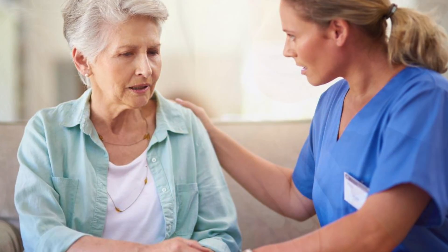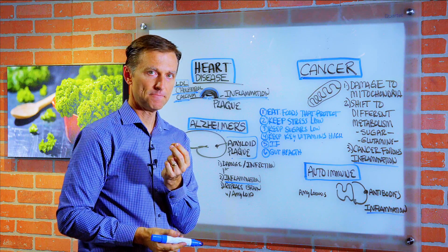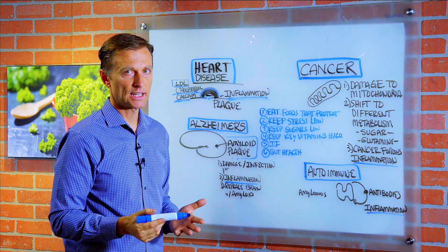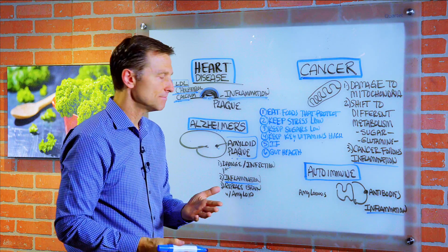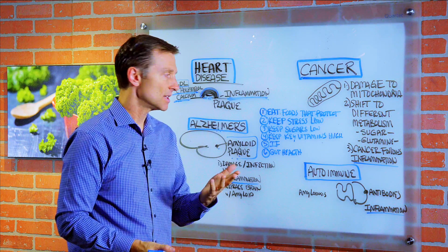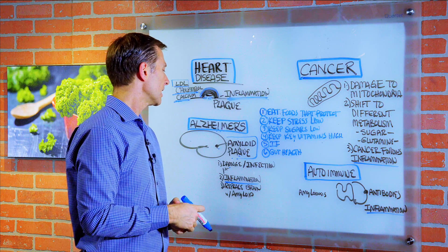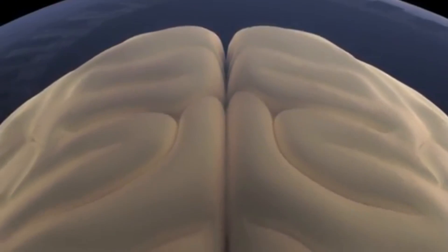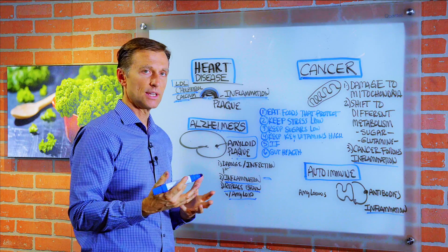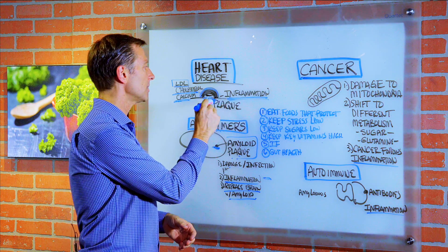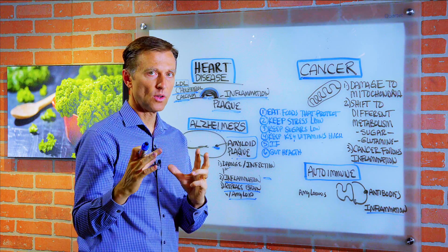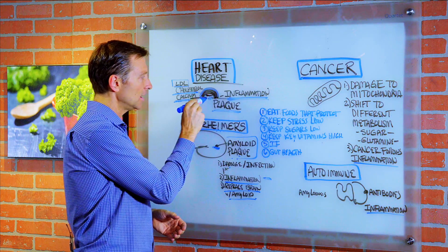Then we get to Alzheimer's. In this situation, you have amyloid plaquing, which is a type of protein. This doesn't come from consuming too much protein — it comes from first having damage to the brain, which could be from an infection, something oxidative, a chemical, or a whole bunch of things. Then you get inflammation, followed by replacement of the damaged brain tissue with amyloid protein. The body is trying to heal or patch something up, just like with heart disease — the plaque is trying to help the body heal the original wound.